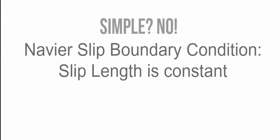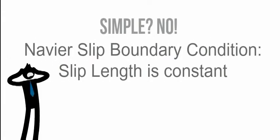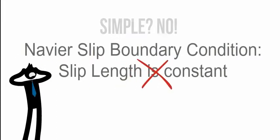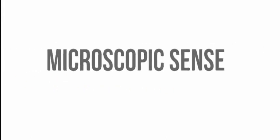You may think you have understood well, not really. In fact, there is still no fundamental understanding of slip. Navier's slip boundary condition in 1827 assumes constant slip length but it's not always true, but it doesn't matter. Let's start from microscopic sense.